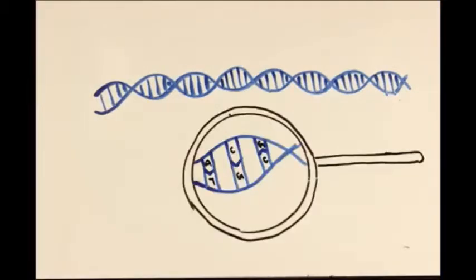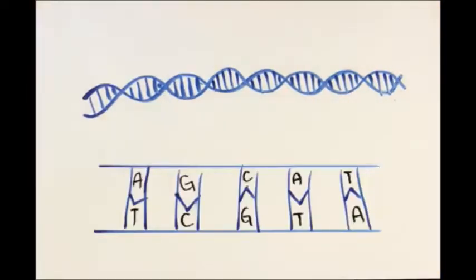If you look close enough, you can see the nitrogenous bases, which contains the genetic code. These bases form in pairs. A and T always pair together, and G and C always pair together.